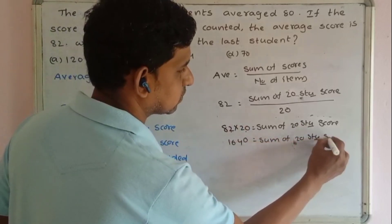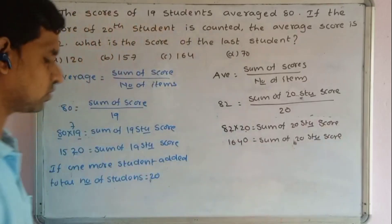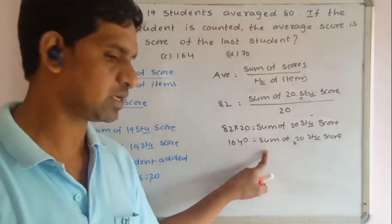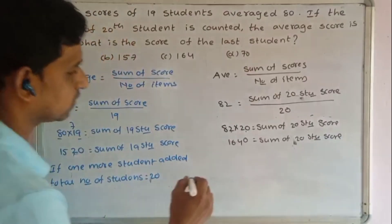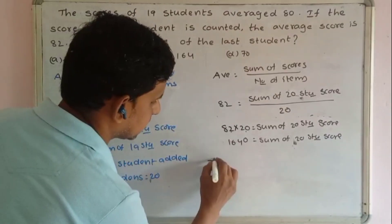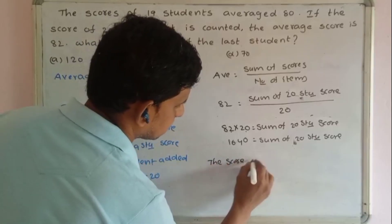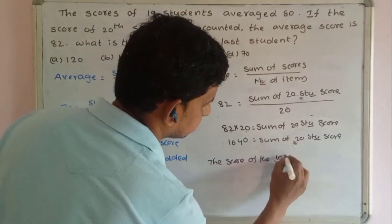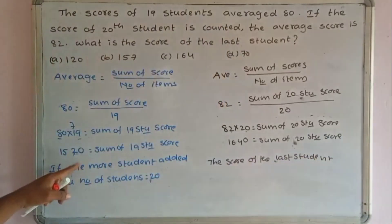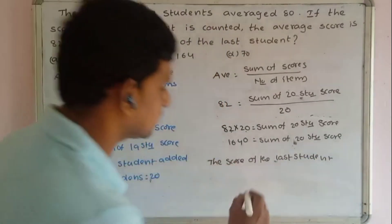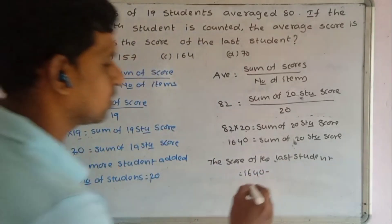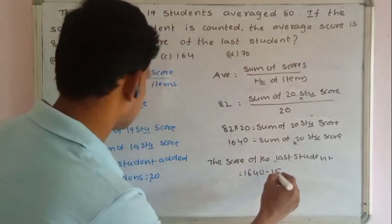Now I want the 20th student's score. Sum of 19 students' scores is 1520, and sum of 20 students' scores is 1640. So the score of the last student equals 1640 minus 1520.